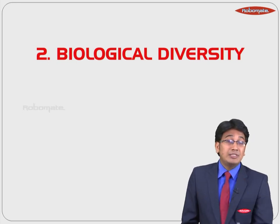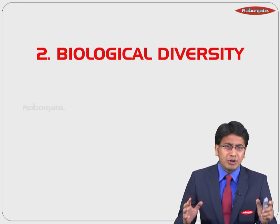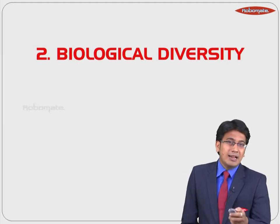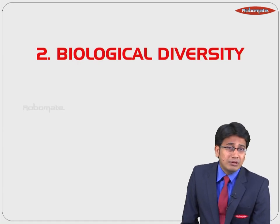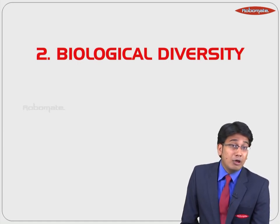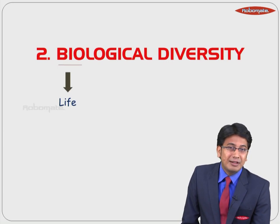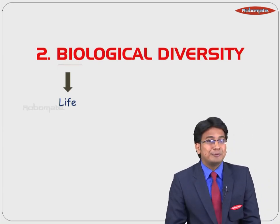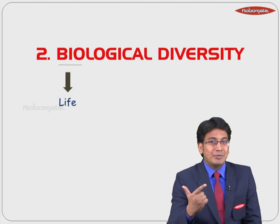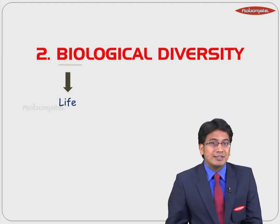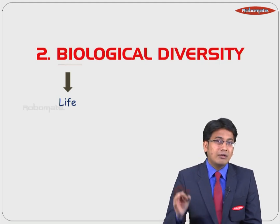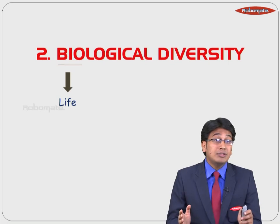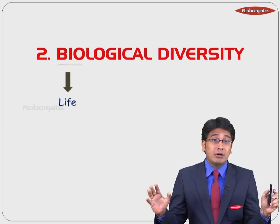This chapter will tell you about the different forms of life around you. Let's understand the name of this chapter. Bio — what do you mean by bio? Bio means life. And life includes all living organisms around you: plants, animals, and microorganisms. Every living organism comes under life, and life is bio. So bio consists of every living organism around you.